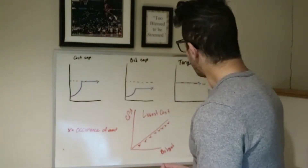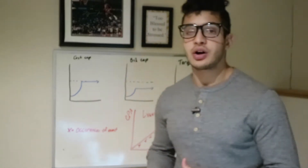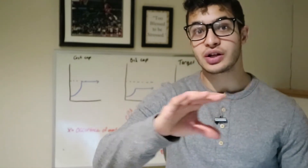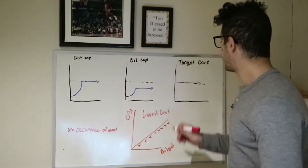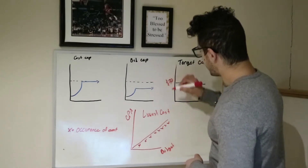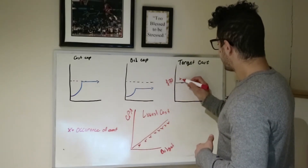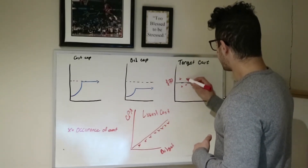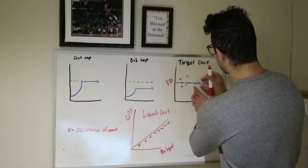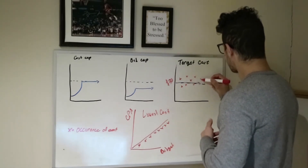The next one is target cost. How target cost works is it aims to get your conversions and events at a certain goal. So let's say you put your bidding strategy at thirty dollars — at thirty dollars you're going to see it try to aim specifically for that thirty dollar target and pretty much break right at thirty dollars.